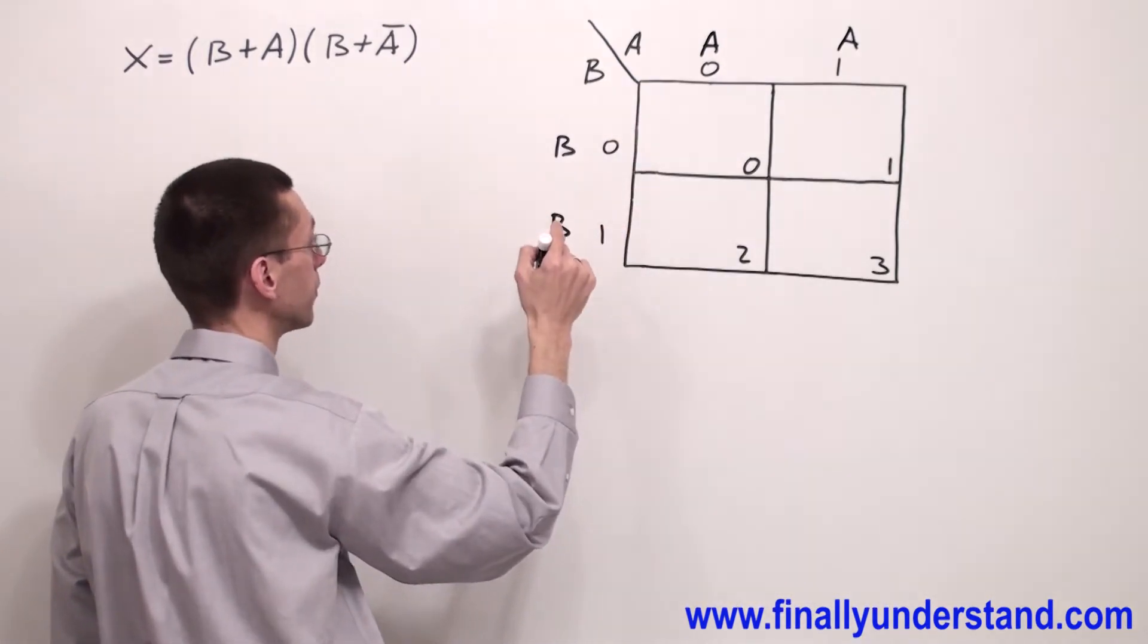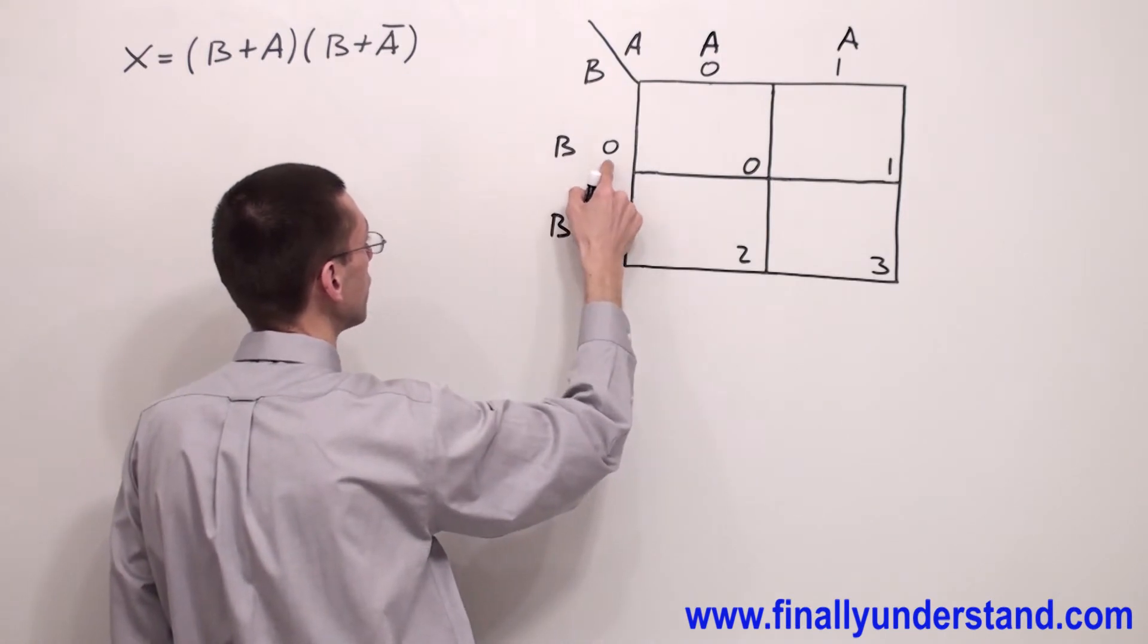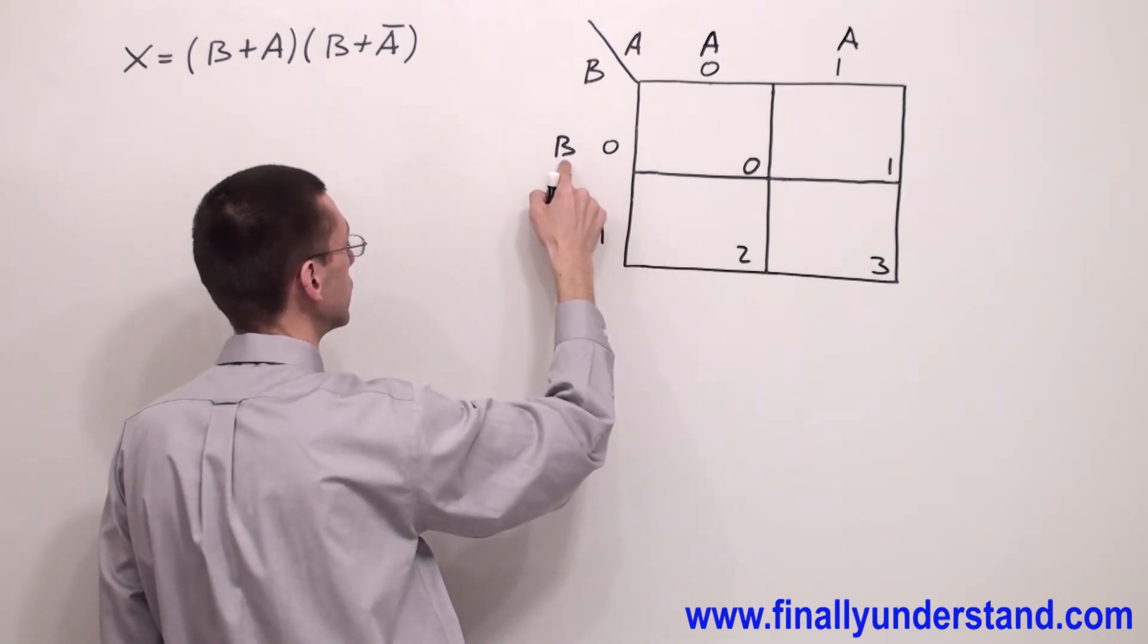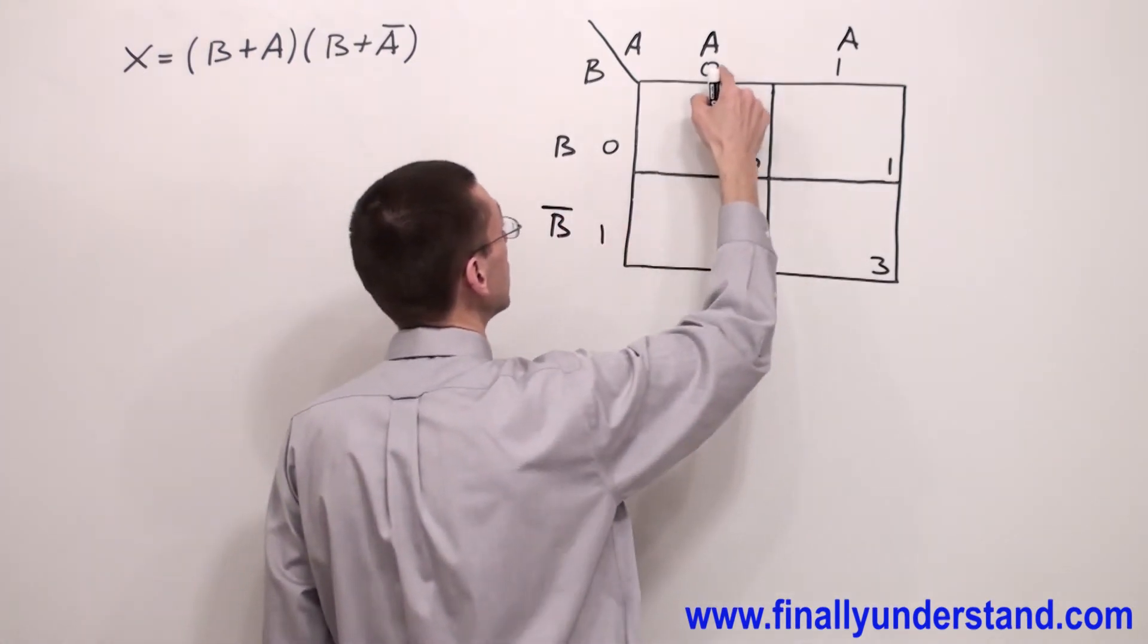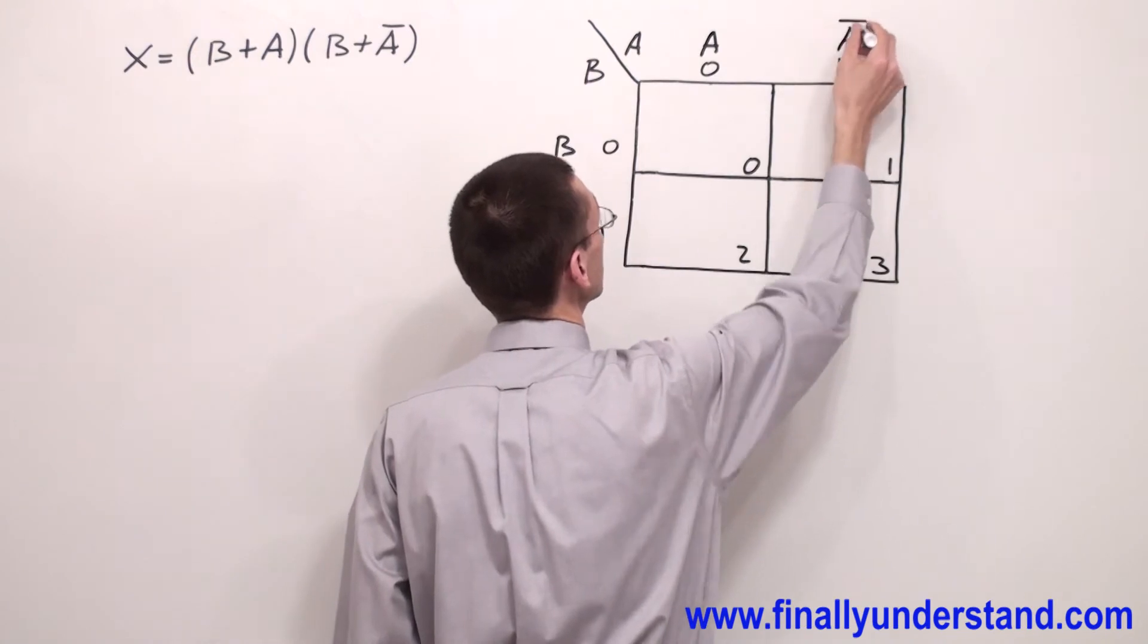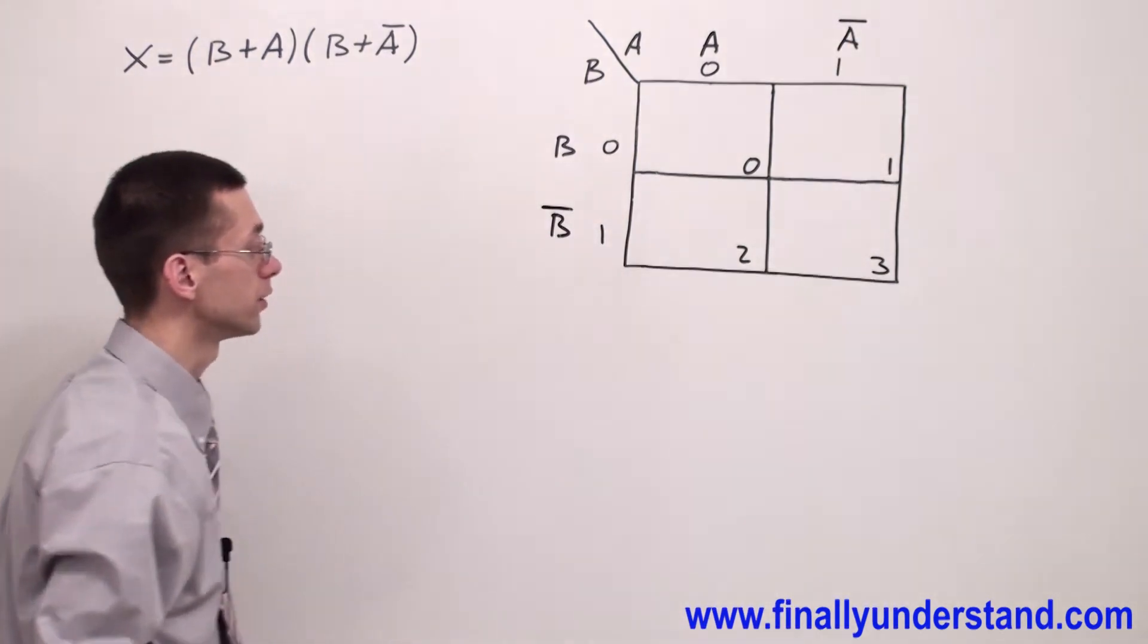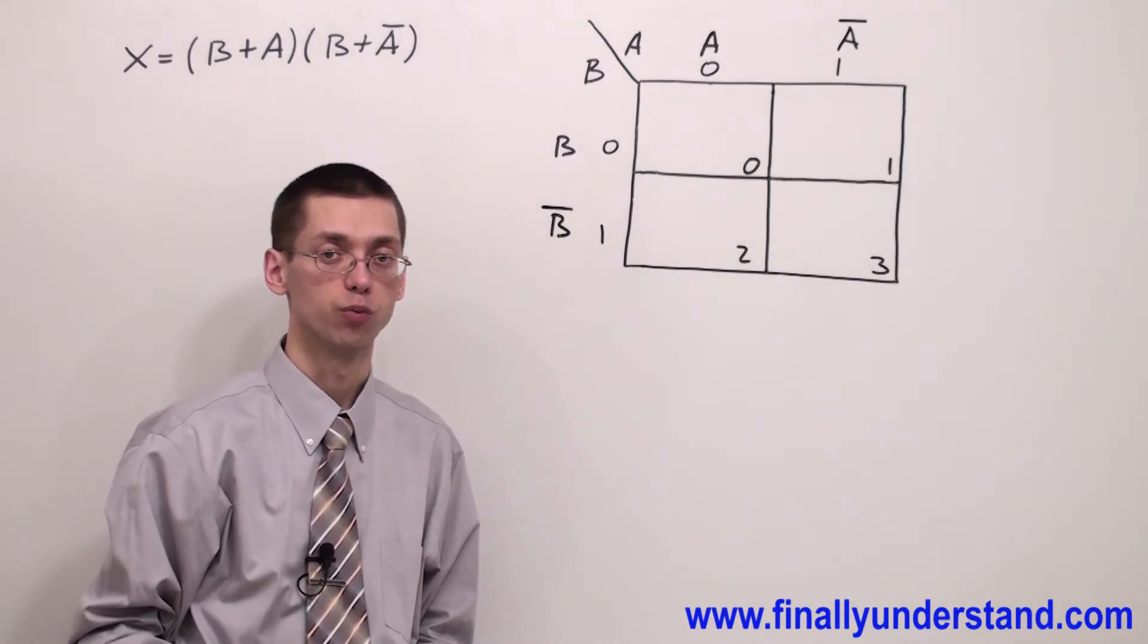But this time because we are dealing with POS, any time you have 0 you are going to have B next to it. Any time you have 1 you are going to have B̄. For 0 you will have A and 1 will give me Ā. This is the way how you are supposed to set the K-map for POS.